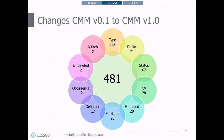The changes between the two CMM versions include: 228 typo corrections, 71 changes in element numbers, 67 changes in the status of an element (mandatory, recommended, or optional), 28 changes in information on controlled vocabularies, 28 elements added, 26 element names altered, 17 element definitions rephrased, 12 occurrence changes, 2 elements removed completely, and 2 XPaths corrected.